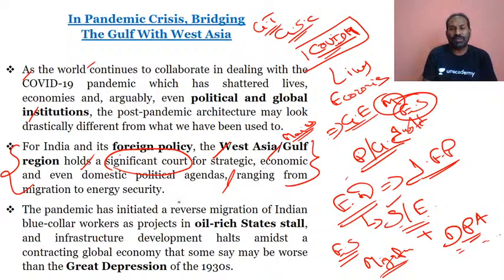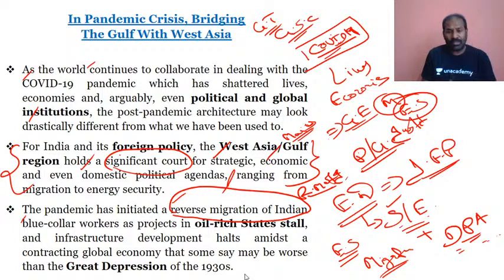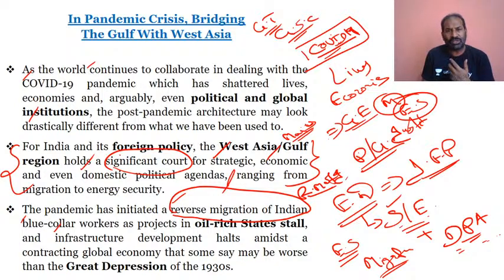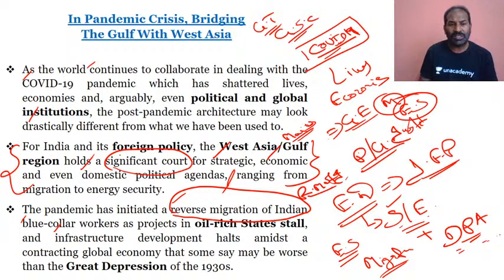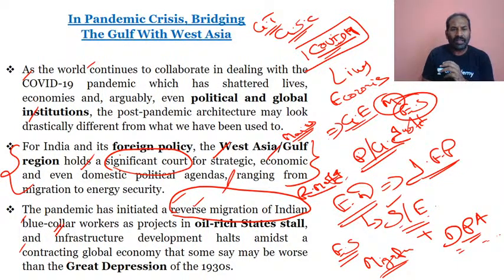The pandemic has initiated reverse migration of India — please take this as a keyword or key phrase. The blue-collar workers, as projects in the oil-rich states halted amidst a contracting global economy, have returned. Because of COVID-19 and the crash in crude oil prices, the reverse migration of India's blue-collar workers is happening. They were working in oil-rich states and in infrastructure development, but that has now halted, contracting the entire global economy — some say the greatest contraction since the Great Economic Depression of the 1930s.